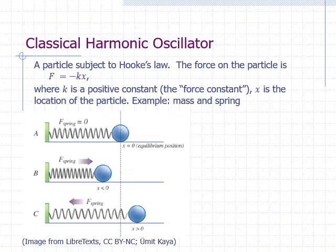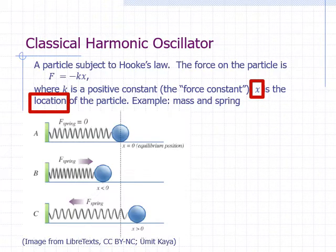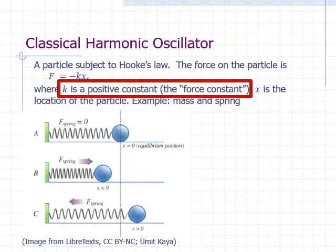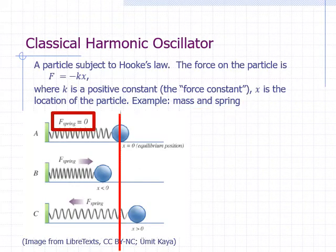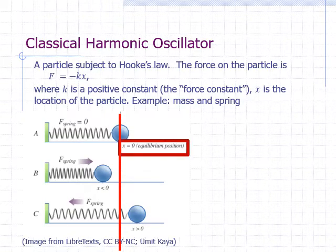A harmonic oscillator is defined in classical mechanics as an object that obeys Hooke's law. Hooke's law is typically written as F equals negative k times x, where F is the force that the particle feels at location x and k is a positive constant called the force constant. An example of a harmonic oscillator is an object attached to a wall with a spring. For the rest of this lesson, we will just use the term particle or oscillator to refer to this object. Hooke's law says that there is a location where the force on the particle is zero. We define that location as our origin, x equals zero, and refer to it as the equilibrium position.